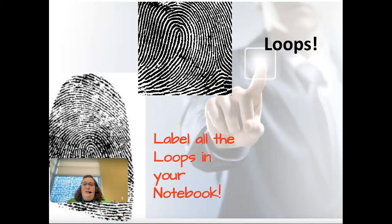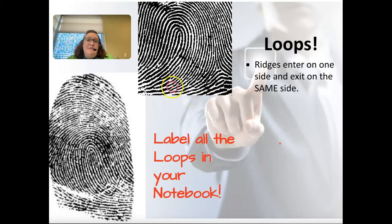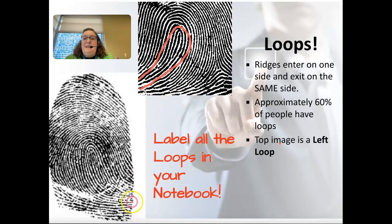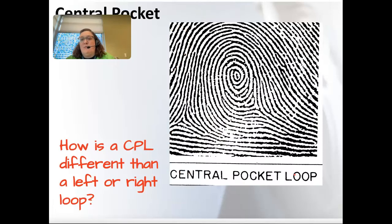Next are loops — ridges enter on one side and leave on the same side. Approximately 60% of people have loops, making them very common. The top image is a left loop because the lines come in on the left, loop around, and exit on the left. If the lines come in on the right and go out on the right, that's a right loop. Make sure you're labeling these in your notebook so you can identify them later.